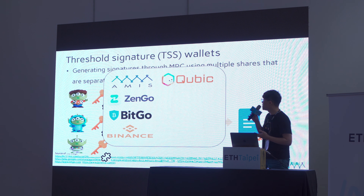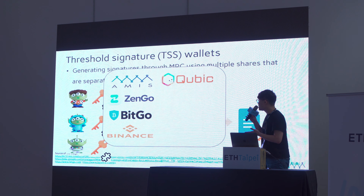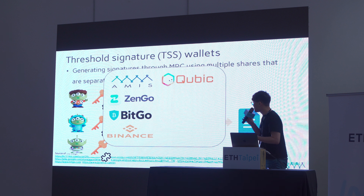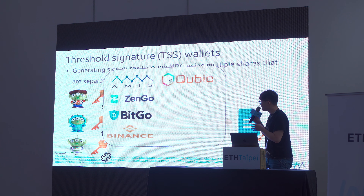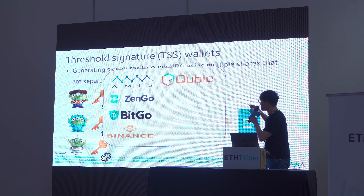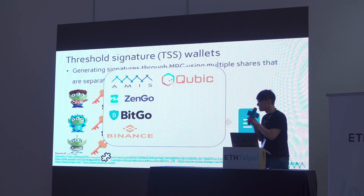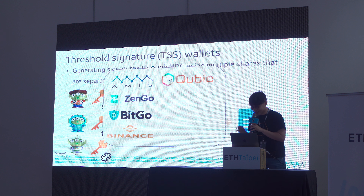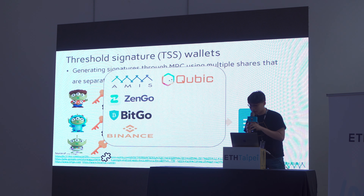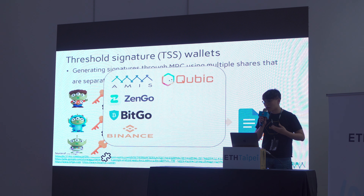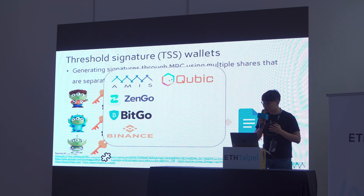Many wallet companies such as AMIS, ZenGo, BitGo, and Binance are adopting TSS. AMIS and ZenGo provide mobile wallet apps, and QB wallet is a product provided by AMIS Technology. TSS is an active research field in recent years with many research achievements.